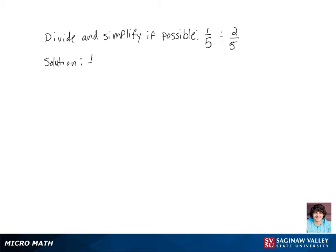Let's divide and simplify 1 fifth divided by 2 fifths. Remember, when we're dividing by a fraction, that's the same as multiplying by its reciprocal, so we're going to get 1 over 5 times 5 over 2.